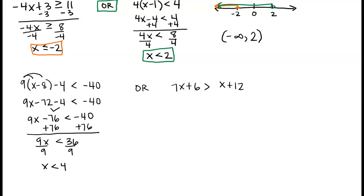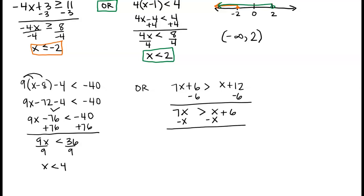Now solving the second inequality: 7x plus 6 is greater than x plus 12. Moving the x's to the left: 7x minus x is greater than 12 minus 6, giving 6x is greater than 6, and dividing by 6 gives x is greater than 1.